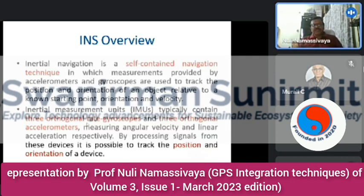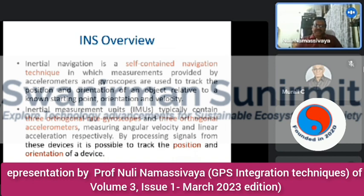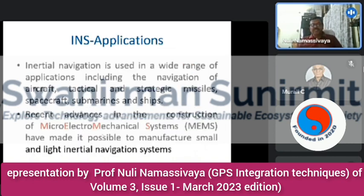An Inertial Navigation System is a self-contained navigation technique in which measurements provided by accelerometers and gyroscopes are used to track the position and orientation of an object relative to a known starting point — that is, orientation and velocity. An IMU — Inertial Measurement Unit — typically contains three orthogonal rate gyroscopes and three orthogonal accelerometers, measuring angular velocity and linear acceleration respectively. By processing the signals from these devices, it is possible to track the position and orientation of any moving object. INS is used in aircraft, tactical and strategic missiles, spacecraft, submarines, and ships.